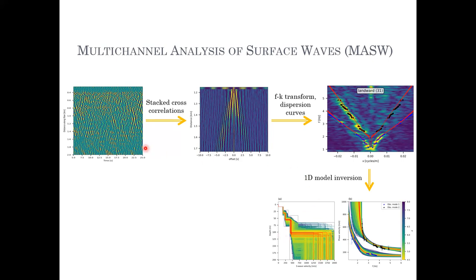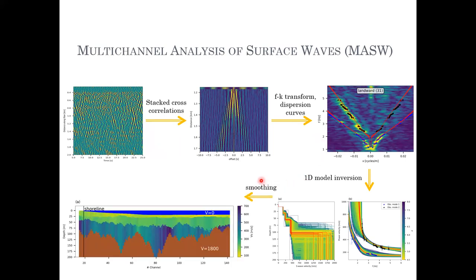When we run the same procedure for different sections of the fiber and apply smoothing, we derive a 2D velocity model — depth as a function of channel along the fiber. This is the shoreline on one side and the seaward edge of the basin on the other. We can see a very significant velocity contrast between the bottom half space and the overlying layers. However, something that's missing here are the clear edges of the basin.